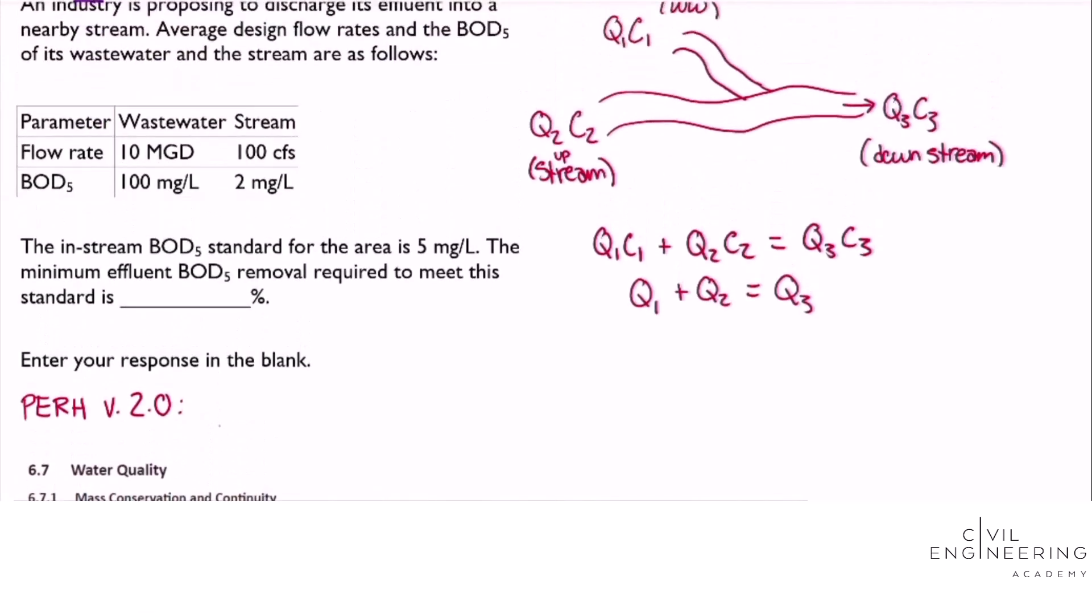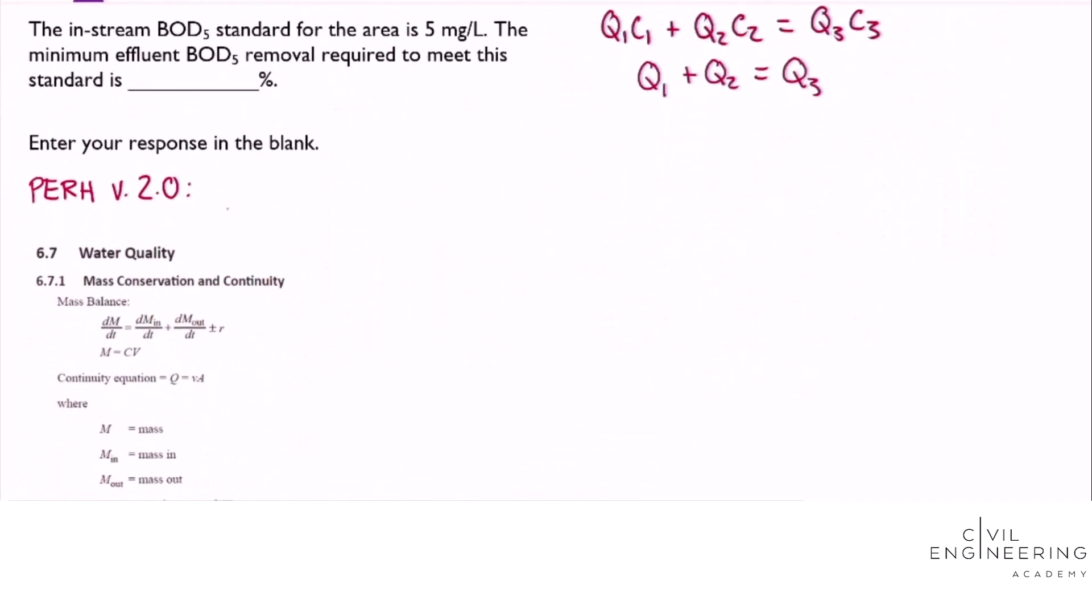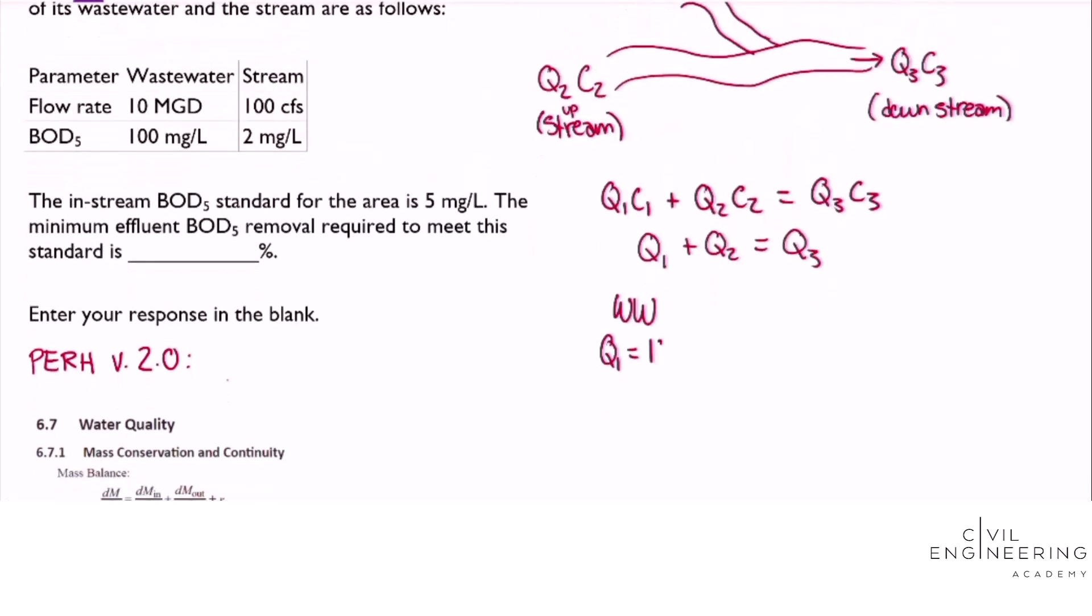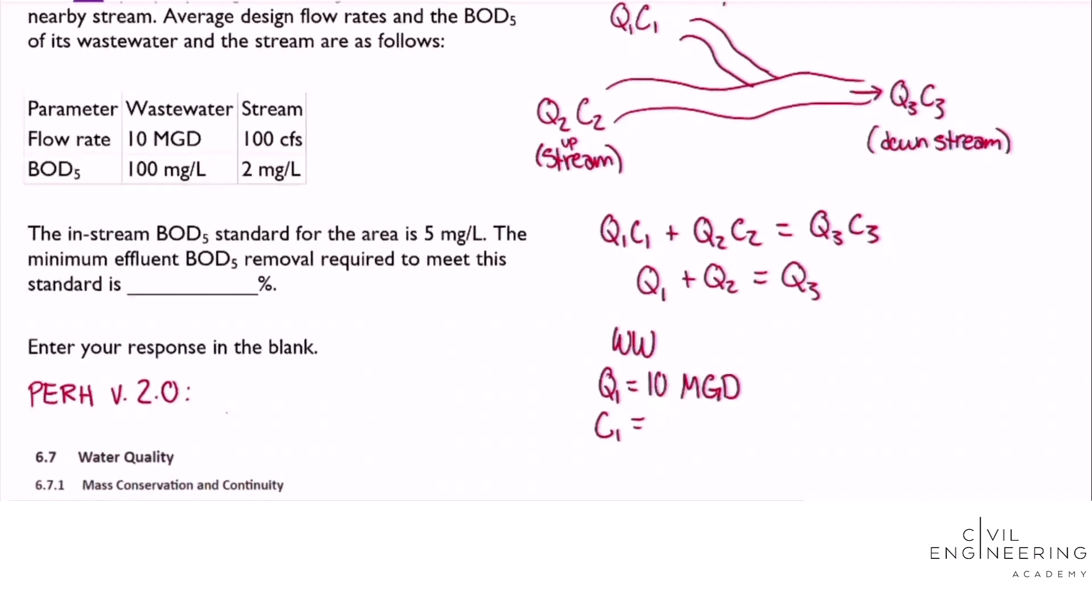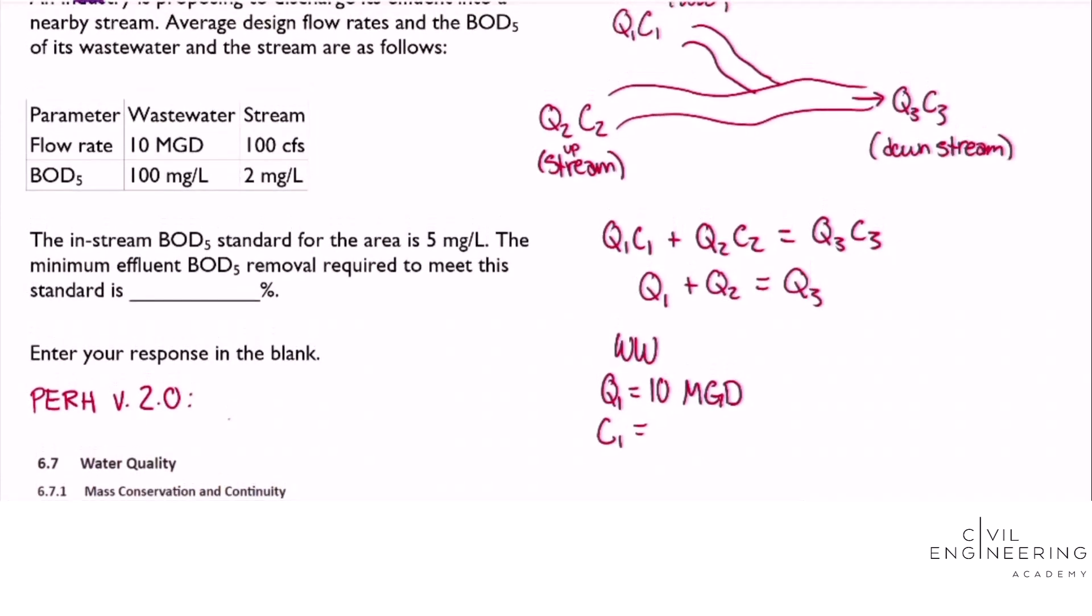Let's list out all our variables. We'll do the wastewater first. Wastewater Q1 is equal to 10 million gallons per day and C1 will actually be the effluent BOD5 from the wastewater treatment plant. It won't be this 100 milligrams per liter because we're asking for the removal percent. We want to find the effluent from the wastewater treatment plant.